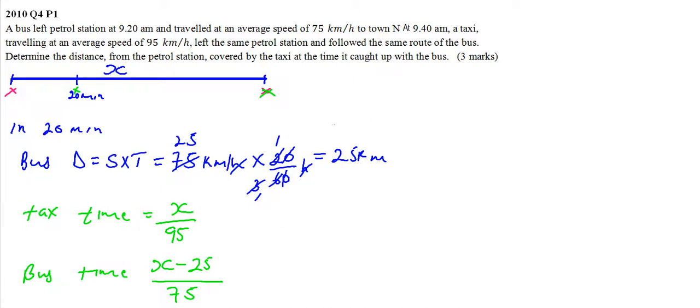So X divided by 95 equals X minus 25 divided by 75.